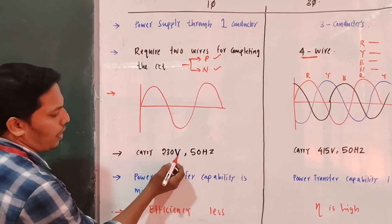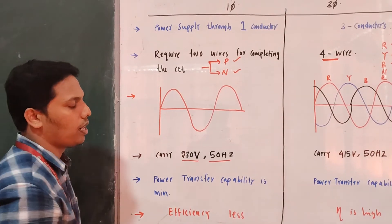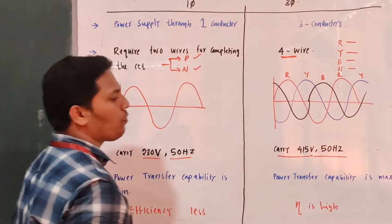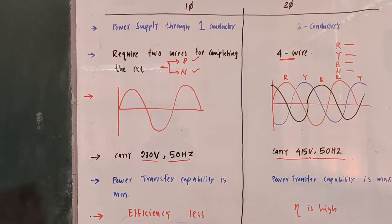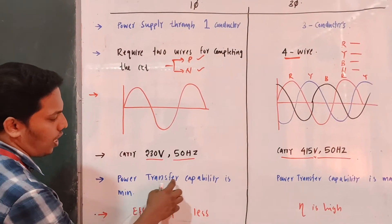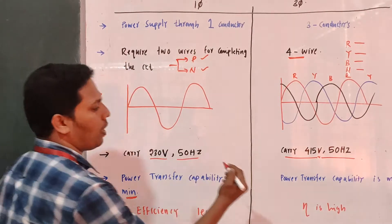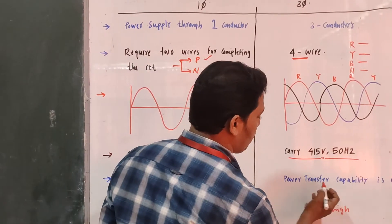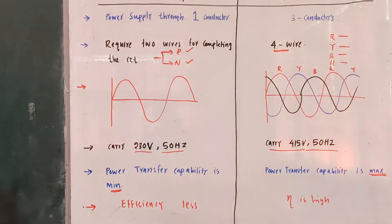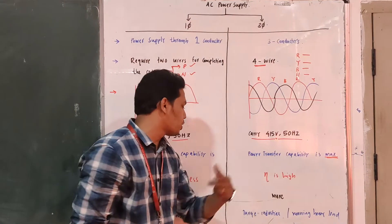Normally, a single phase supply carries a rating of 230 volts, 50 Hz. But in the case of a three phase supply, the rating is 415 volts, 50 Hz. Another point: the power transfer capability is minimum for a single phase supply, but compared with the three phase system, the power transfer capability is very high. Power transfer capability is minimum for single phase and maximum for three phase.